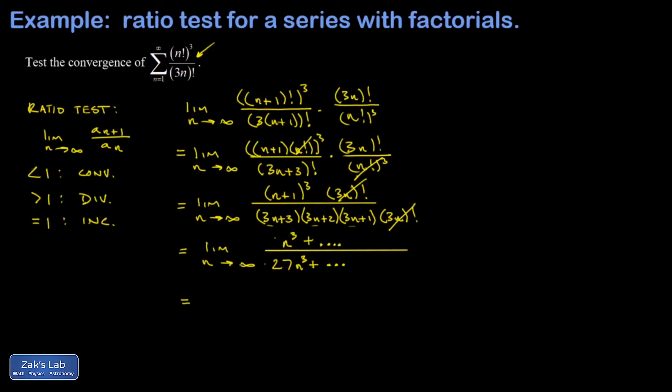Another way to say all this is that the highest power of n dominates the numerator and denominator. The other terms become negligible in the large n limit. I can cancel my n³ and end up with the limit as n goes to infinity of 1/27. That's just 1/27, which is less than 1, and we conclude that our original series converges.